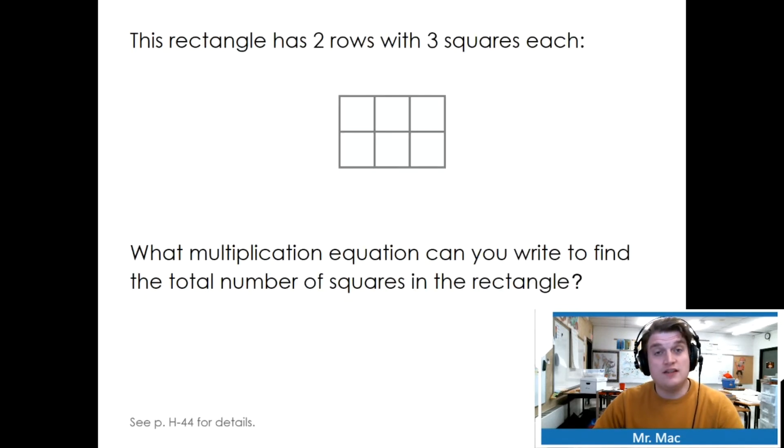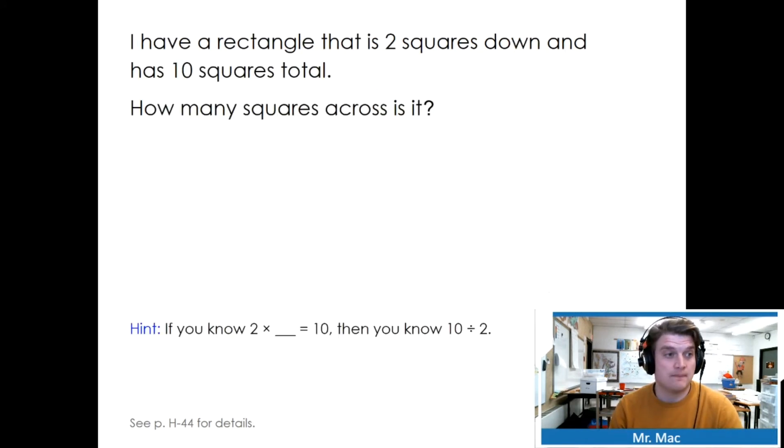Try the next couple by yourself. Now, this rectangle has 2 rows and 3 squares each. What multiplication equation can you use to write the total number of squares in the rectangle? There are 2 rectangles by 3 rectangles. So we know that this is 2 times 3, which gives us 6 total rectangles. I have a rectangle that is 2 squares down and has 10 squares total. How many squares across? I'm going to have to be counting by 2's until I get to 10 total: 2, 4, 6, 8, 10. How many squares across the top? That's going to be 5. If I know that 2 times something equals 10, then I know 10 divided by 2.